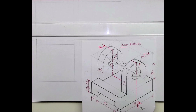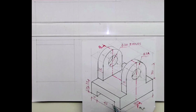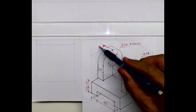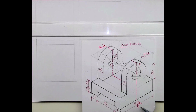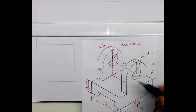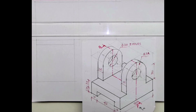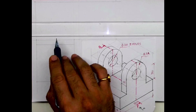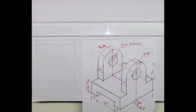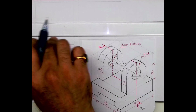Welcome to technical drawing. Today we'll draw the front view, top view, and side view, and then later draw a sectional side view. We are doing section orthography. The length is 80, height is 78, and width is 70. We'll draw the layout with front view, top view, and side view.